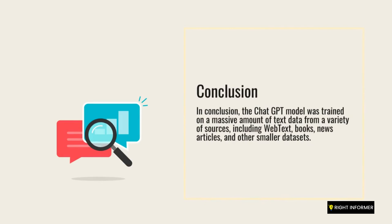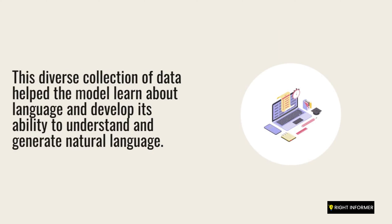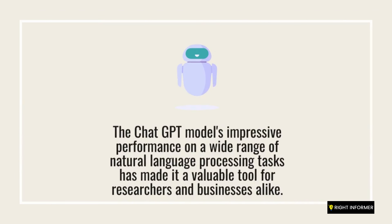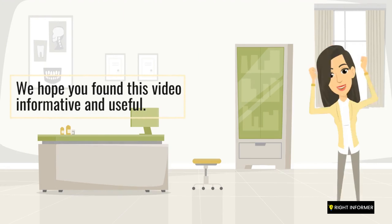In conclusion, the ChatGPT model was trained on a massive amount of text data from a variety of sources, including webtext, books, news articles, and other smaller datasets. This diverse collection of data helped the model learn about language and develop its ability to understand and generate natural language. The ChatGPT model's impressive performance on a wide range of natural language processing tasks has made it a valuable tool for researchers and businesses alike. We hope you found this video informative and useful.